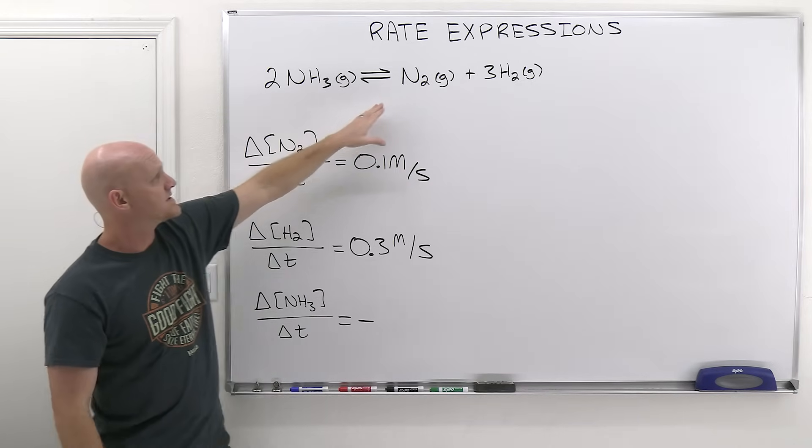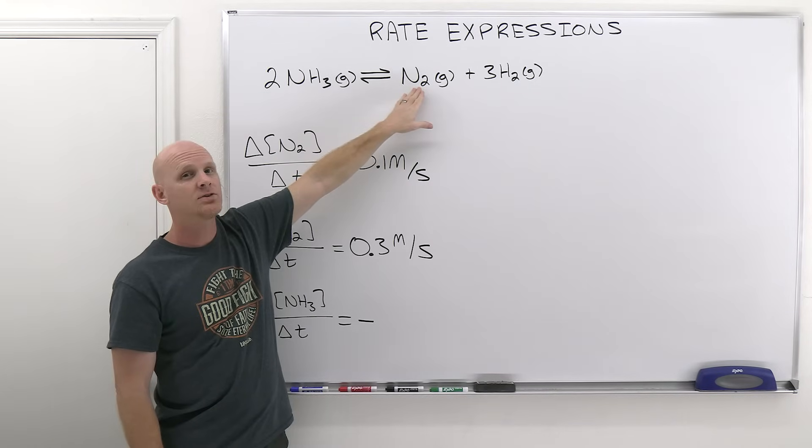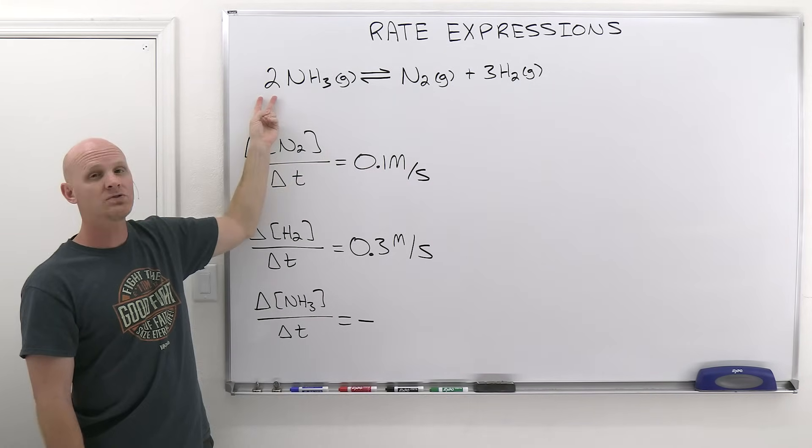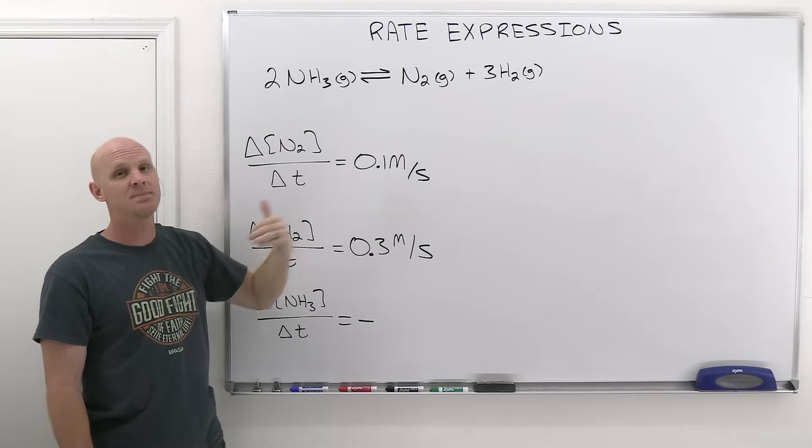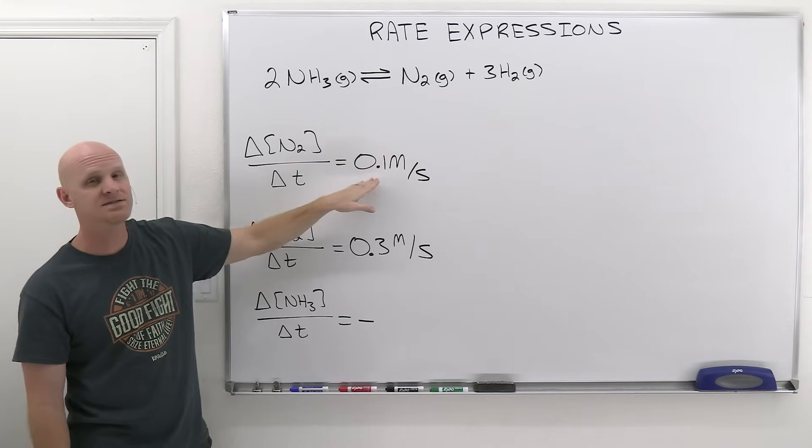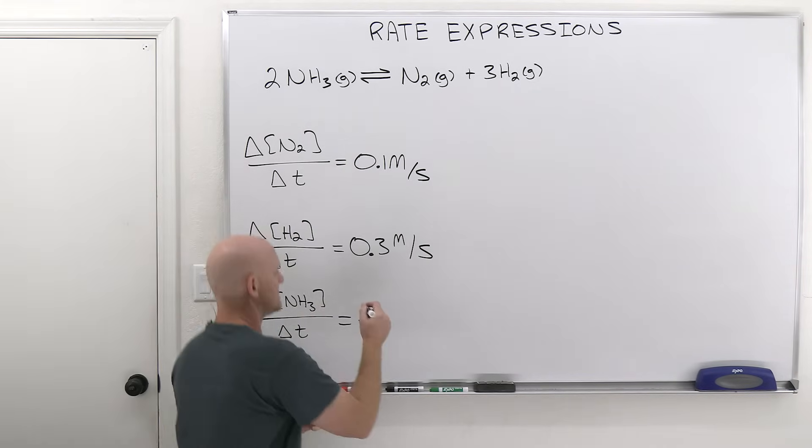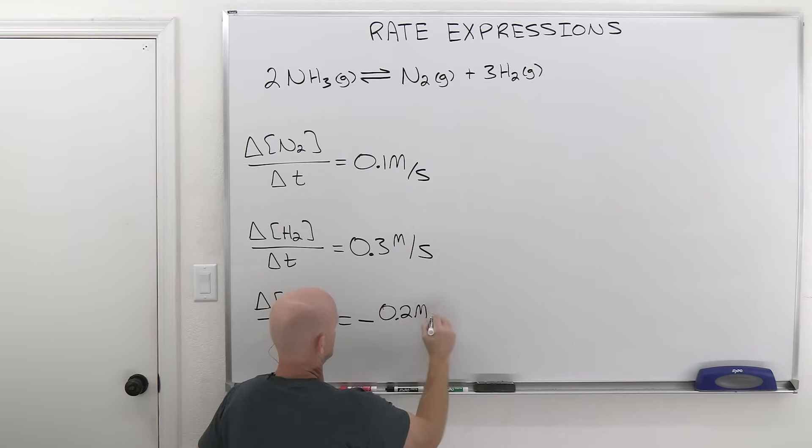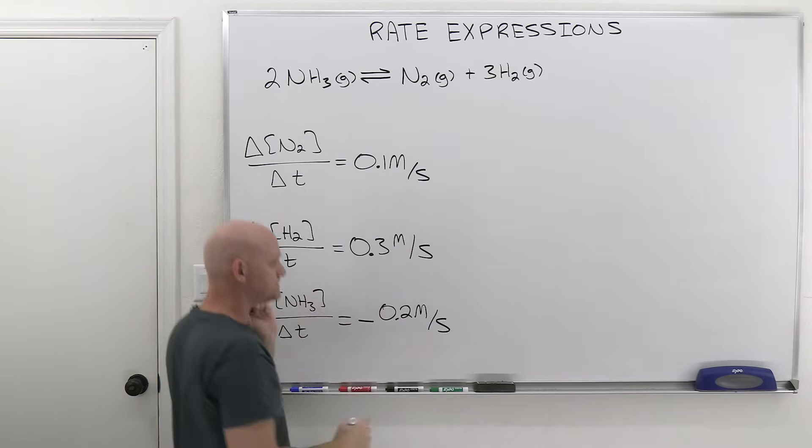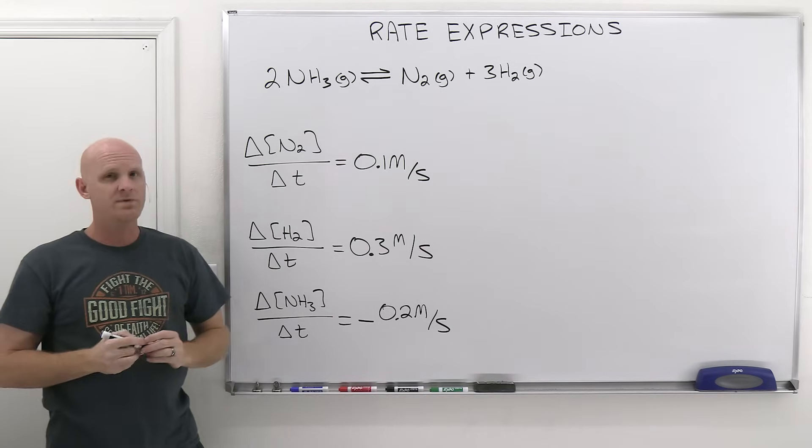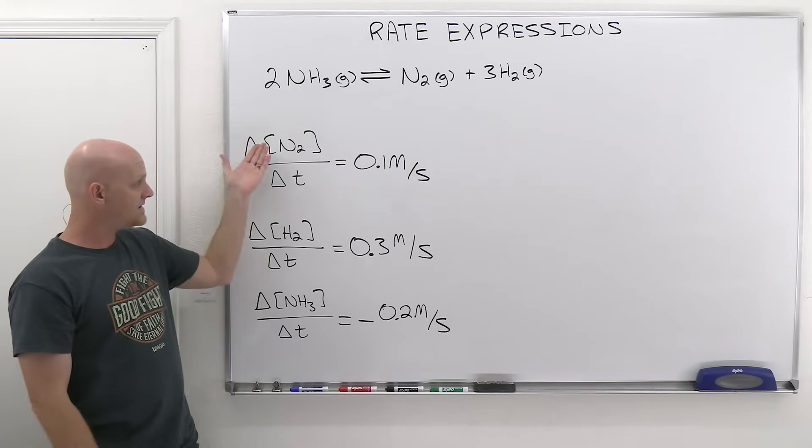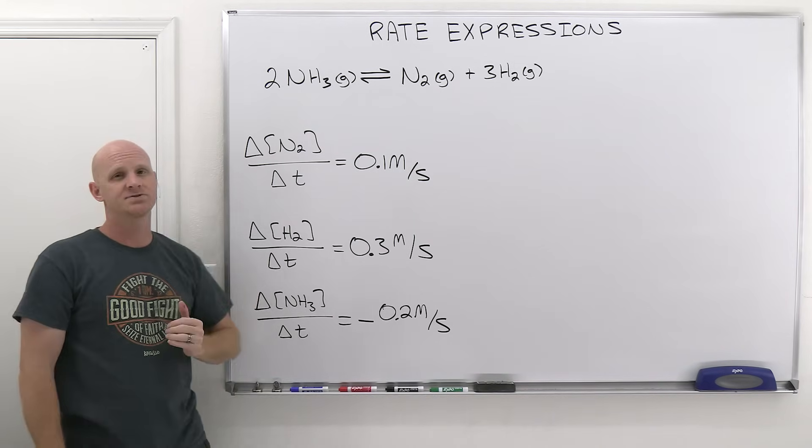Now in this case, we can see again that for every one mole of N2 being produced, we're going to consume two moles of NH3, twice as many. So its rate's going to be twice as big as that of N2. In this case, it'll be 0.2 molar per second. So now we've got three different rates here: one for N2, one for H2, one for NH3.